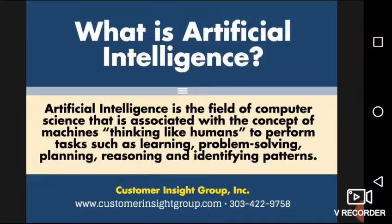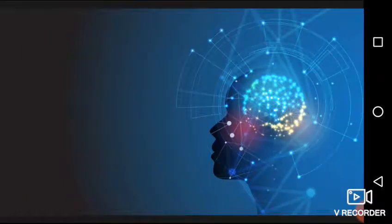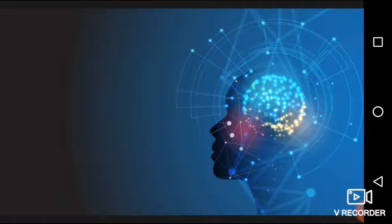Sub-fields have also been based on social factors, particular institutions, or the work of particular researchers. Traditional problems or goals of artificial intelligence research include reasoning, knowledge representation, planning, learning, and natural language processing.